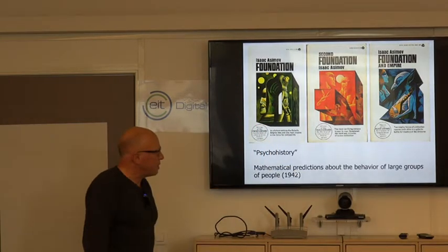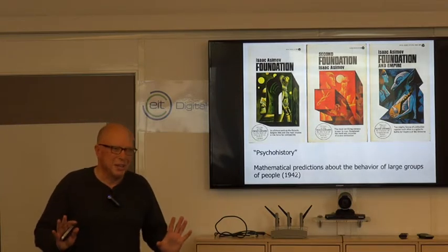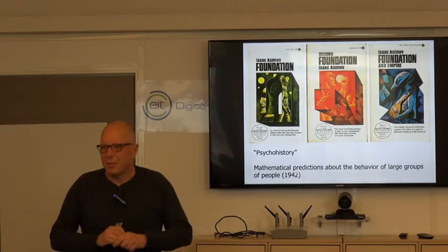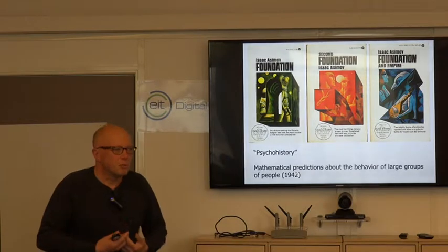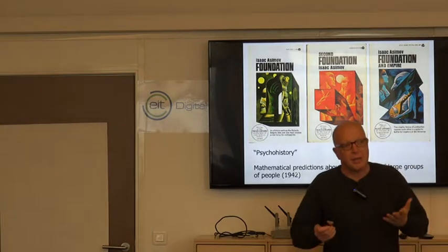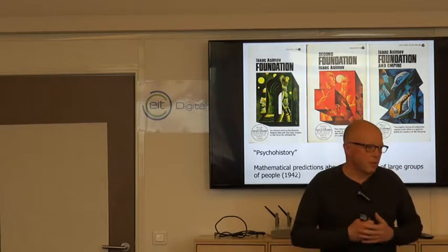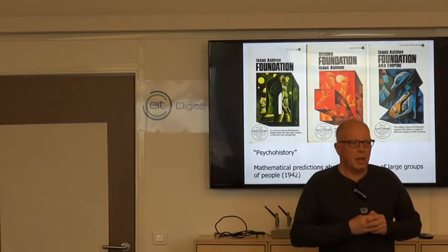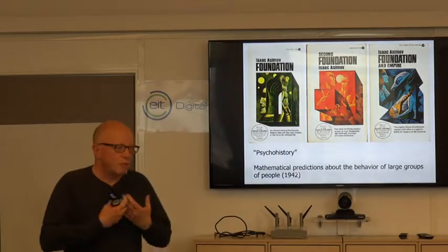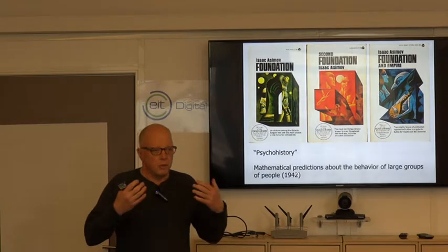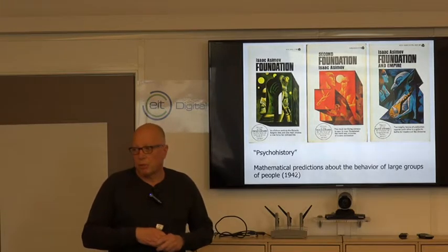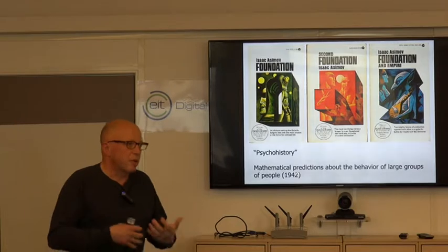It's called psychohistory. Mathematical predictions about behaviors of large groups. I used to think this is an amazingly crazy idea, no way is that something that has any potential to be realized in the real world. So what I want to say today is that, yeah, that's exactly what we're doing in the real world. I want to give you examples today of how we can use mathematics to describe the behavior of large groups of people and use that to make progress on various kinds of problems that are relevant from an engineering and social standpoint.